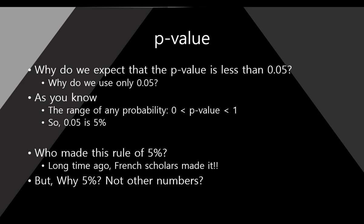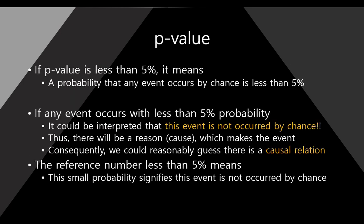But here, the real meaning of 5% p-value is this: if the p-value is less than 5%, it means the probability that any event occurs by chance is less than 5%.